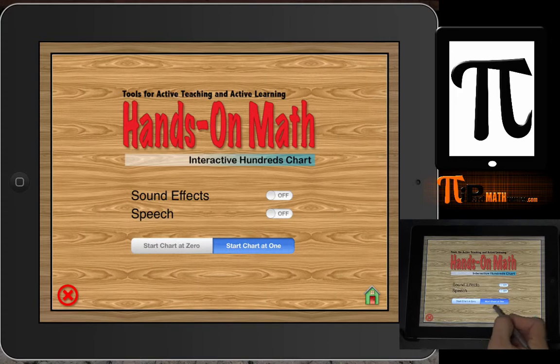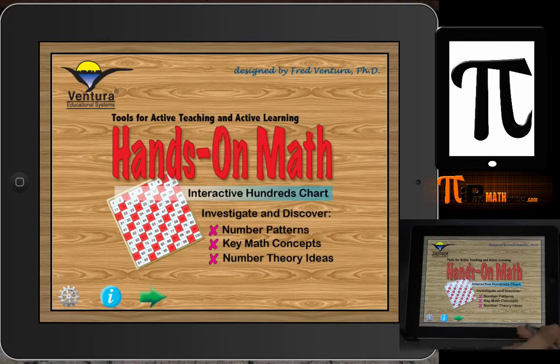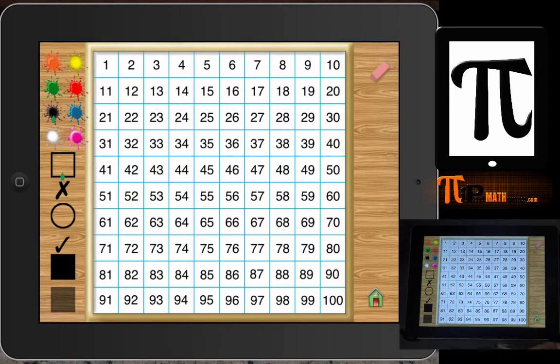Starting with the hundreds chart at one, we will go back, and here's your hundreds board. For general investigation into this app, you can click on a block and it puts a square around it.